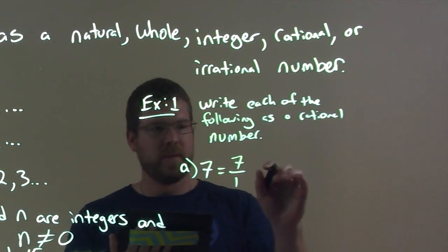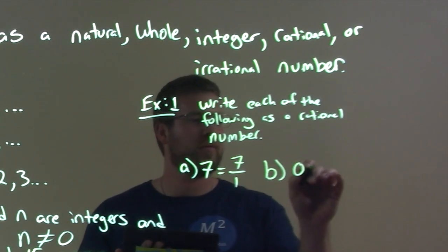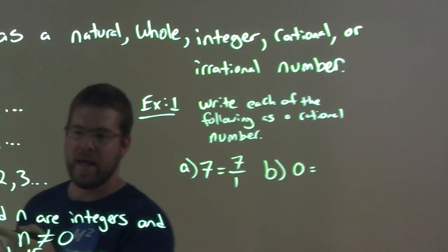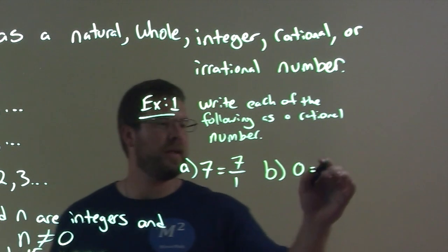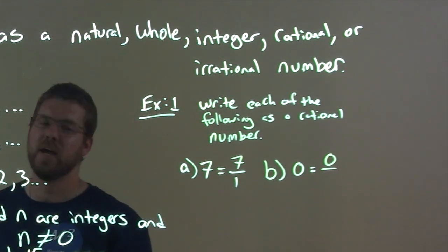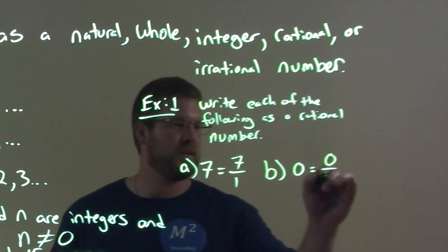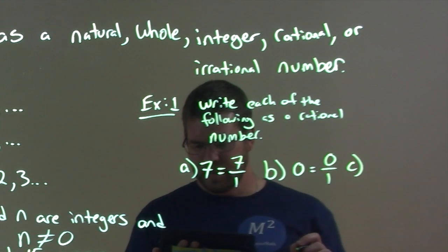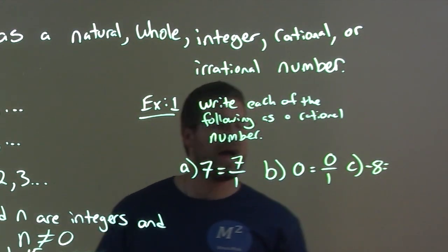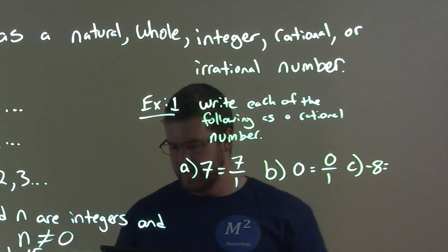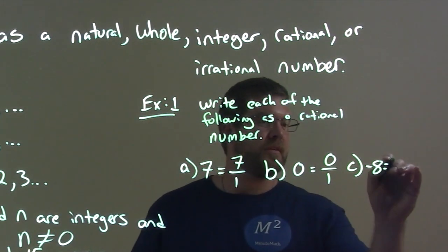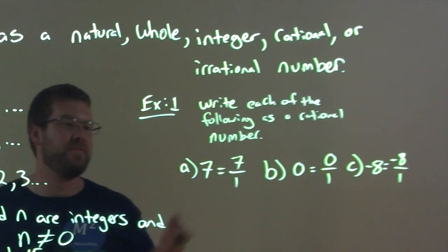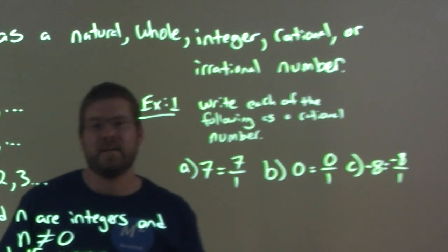Lastly, part c is negative 8. To write that as a rational number, negative 8 over 1. Really, you just take the integer that you have and put it over 1, and you've got it.